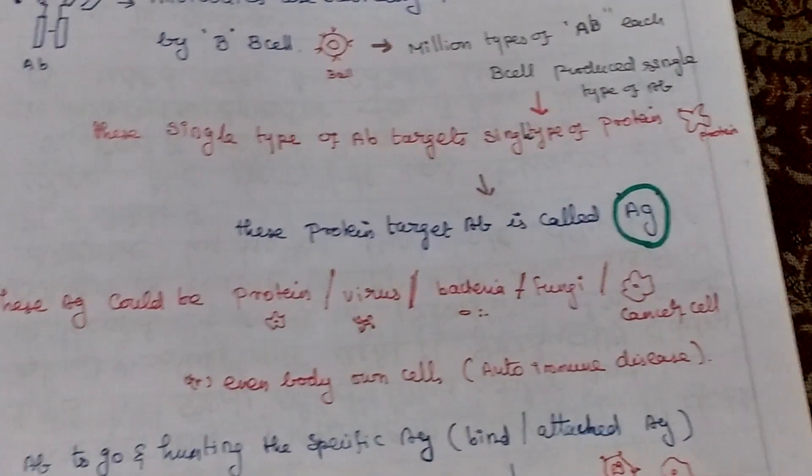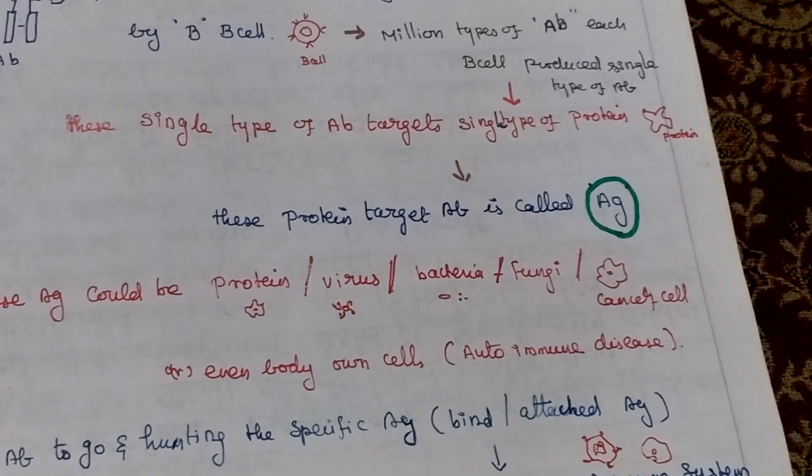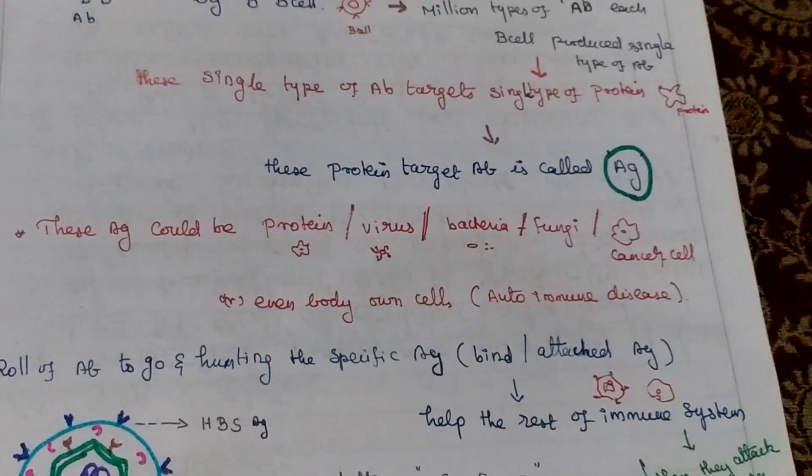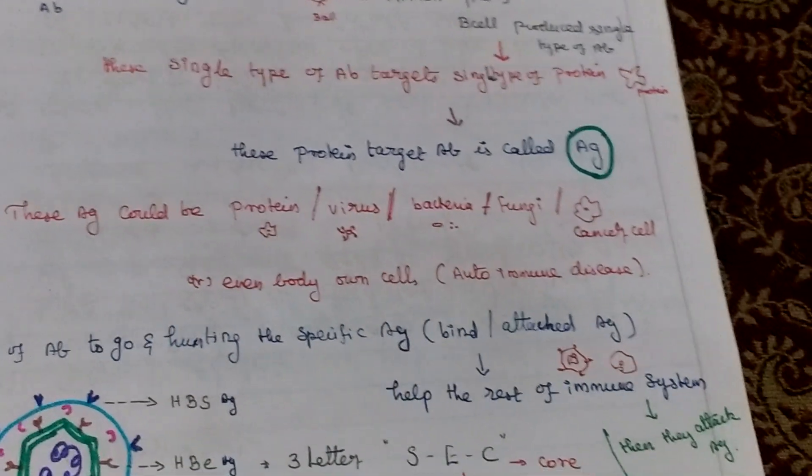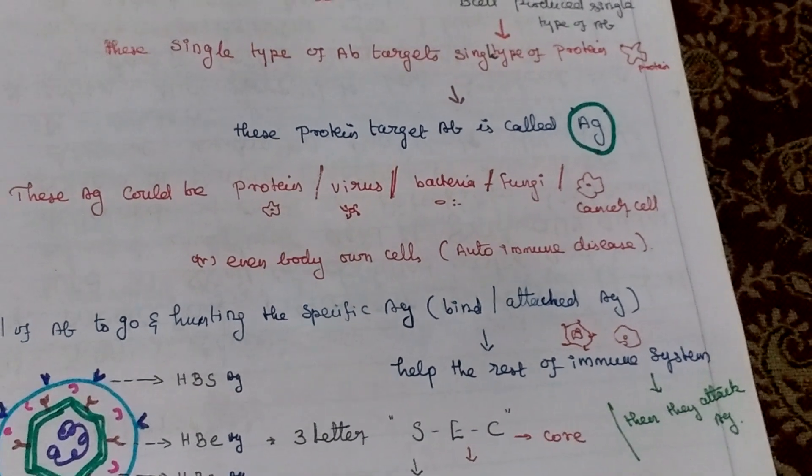These protein targets the antibody are called antigens. Antigens may be protein molecules, viruses, bacteria, fungi, cancer cells, or even the body's own cells. The role of antibody is to bind with antigen and help the rest of the immune system attack that antigen.